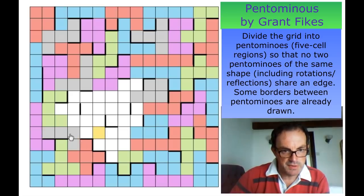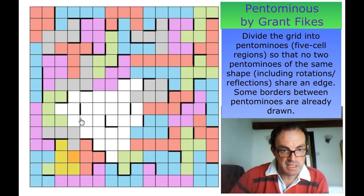This could be — no, it can't be a T because of this T — so it's not taking that square; it must take that one and be a Y.